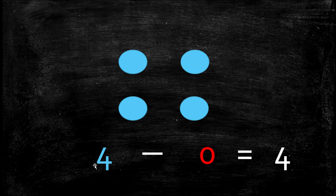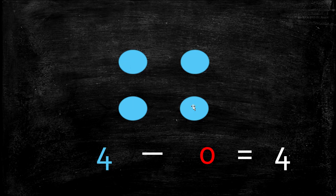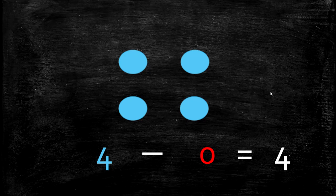The next fact we have is 4 minus 0 equals 4. So if we have 4 — 1, 2, 3, 4 — but we don't take anything away, we take 0 away. How many are we left with? 4. 1, 2, 3, 4. Yes.